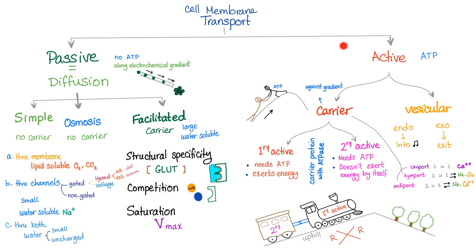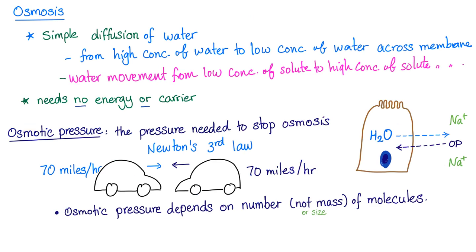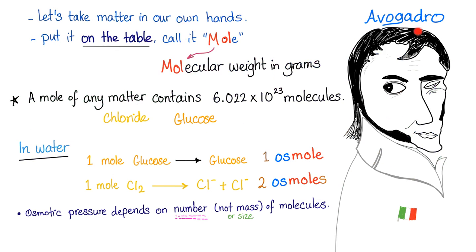Osmosis is passive — simple diffusion. As I told you in the previous video, osmosis is simple diffusion of water from high concentration of water to low concentration of water, or from low concentration of solute to high concentration of solute. Osmotic pressure is the pressure needed to stop osmosis. We care about the number of molecules, the number of osmols — not the mass.